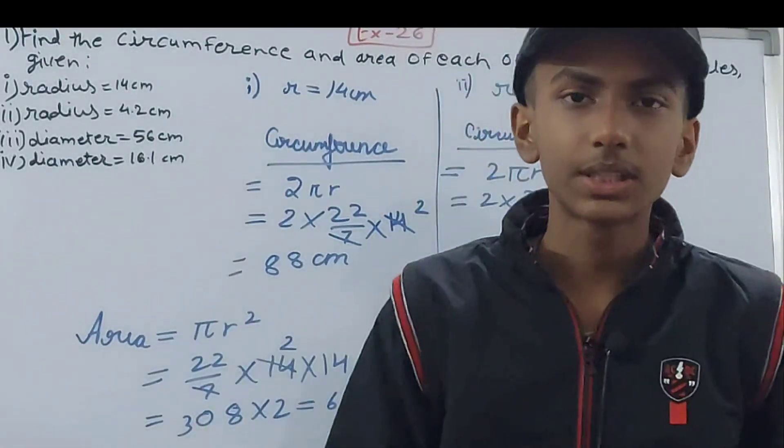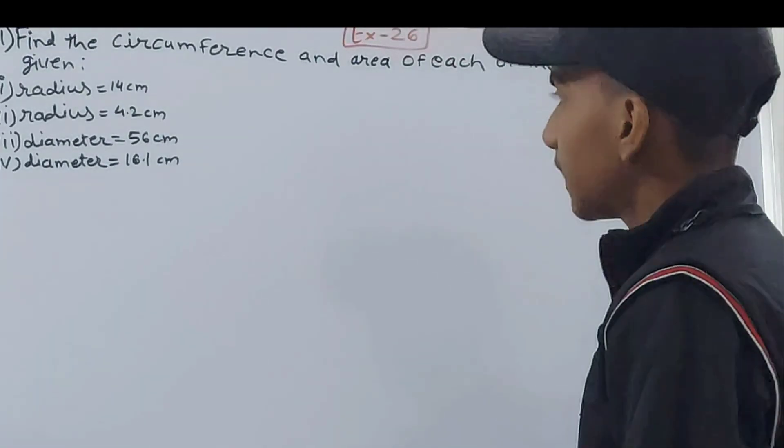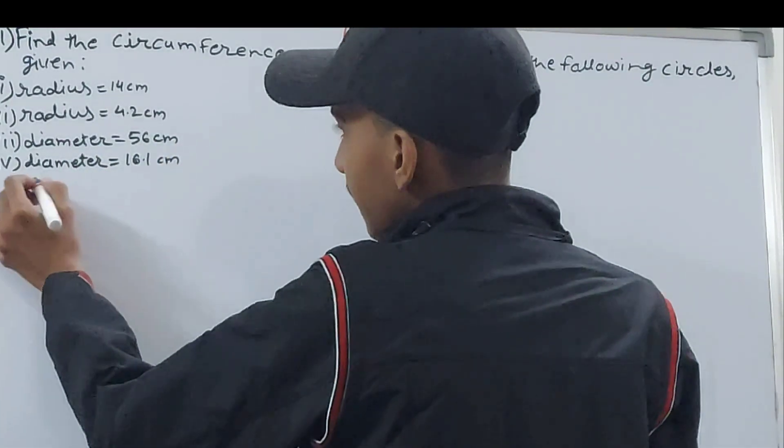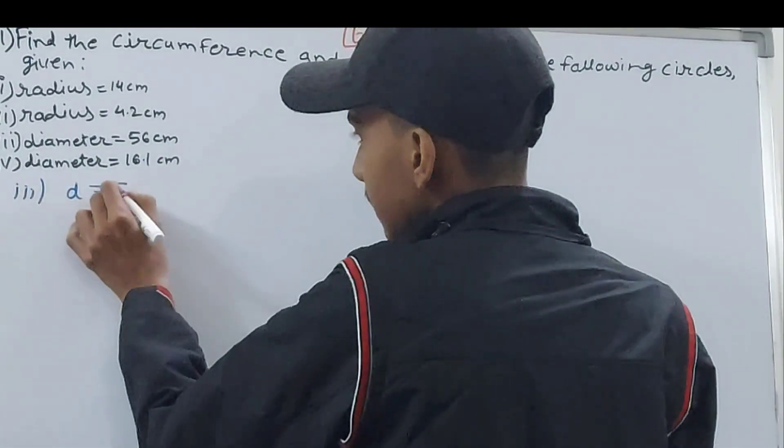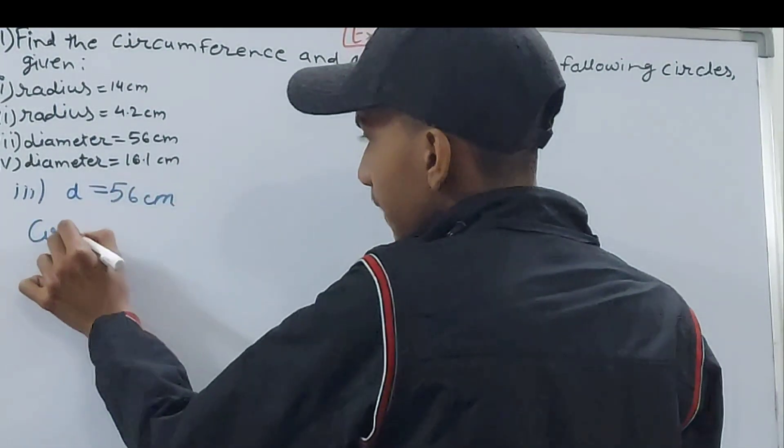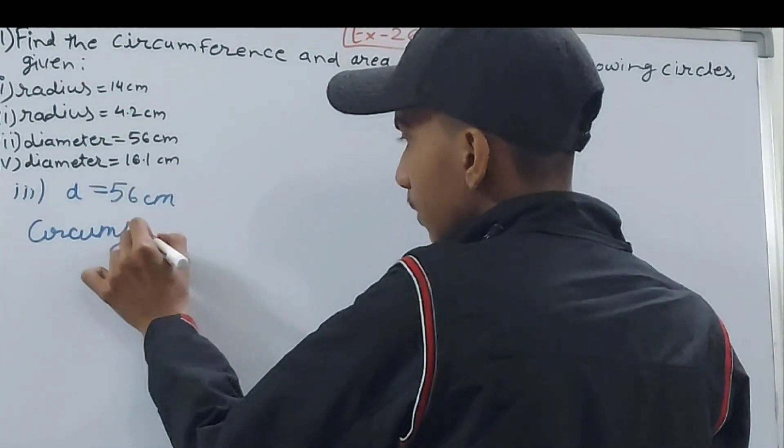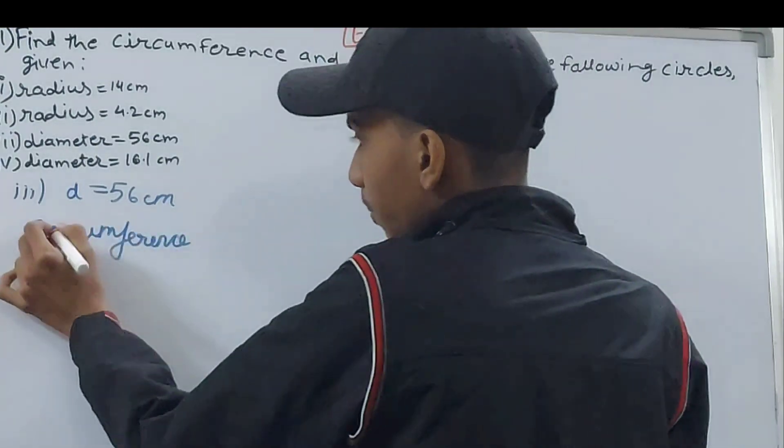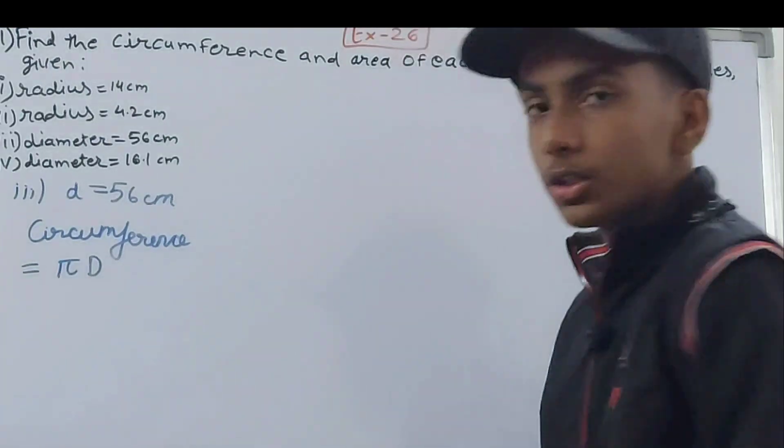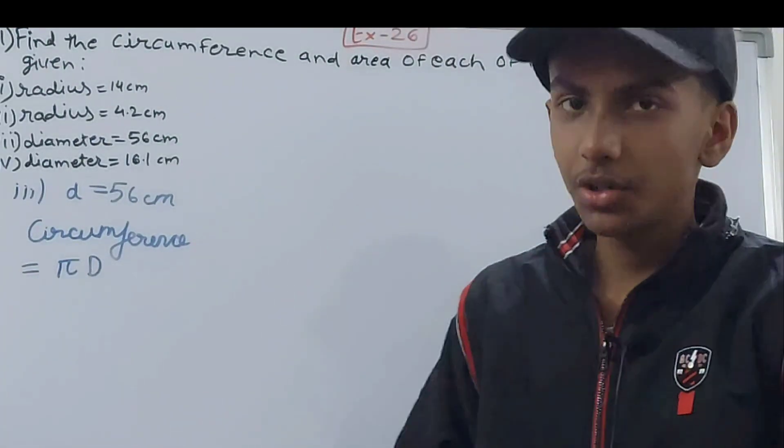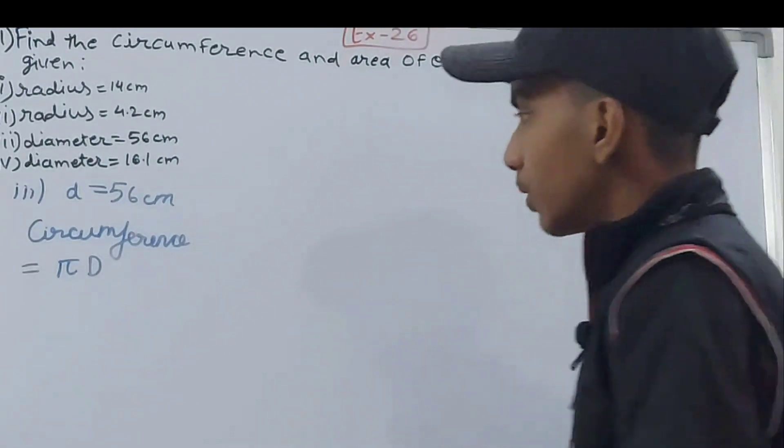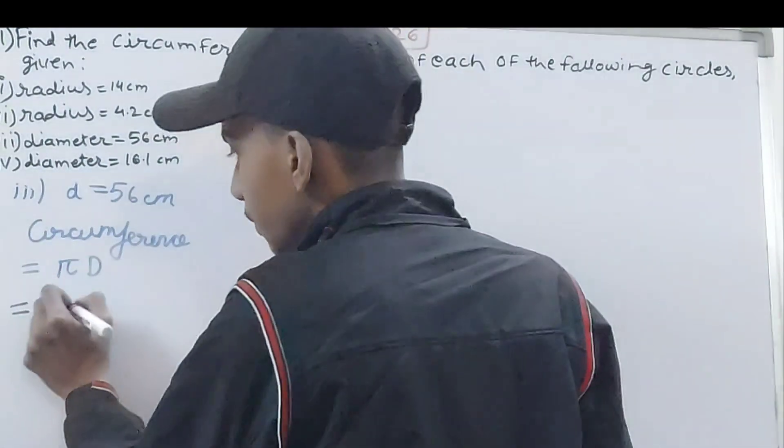Let's move on to the next part. Now the next one is the third part and here we have the diameter as 56 centimeters. When we have the diameter then my circumference will be equal to πd, where d is the diameter. We don't have to take out the radius, with the diameter only our work will be done.